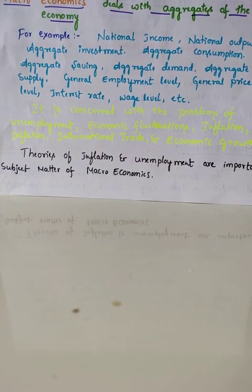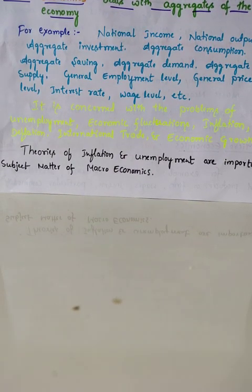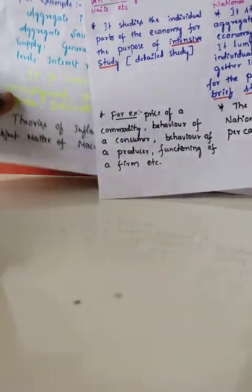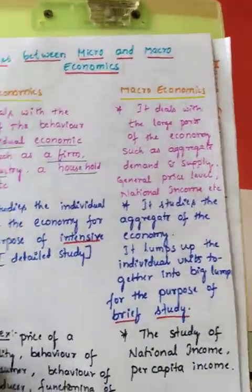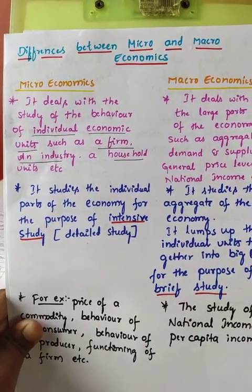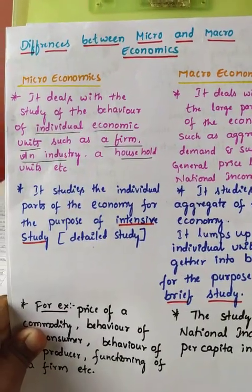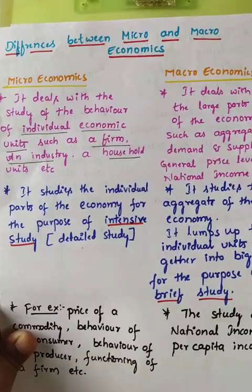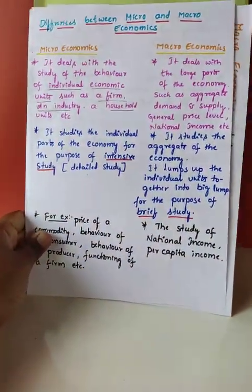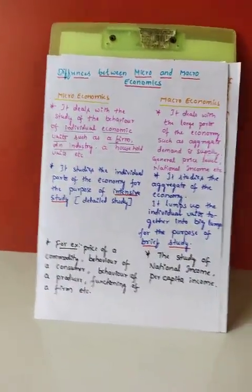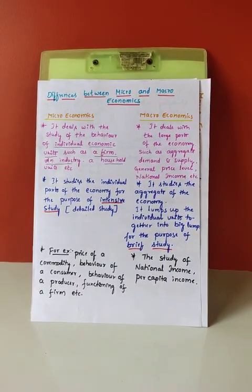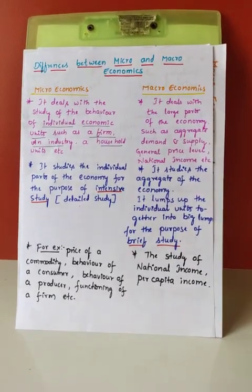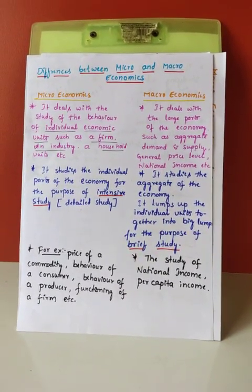Now let us discuss the differences between micro and macro. Microeconomics deals with the study of the behavior of individual economic units — such as a firm, an industry, and a household. Macroeconomics deals with the large parts of the economy, such as aggregates like aggregate demand, aggregate supply, general price level, and national income.